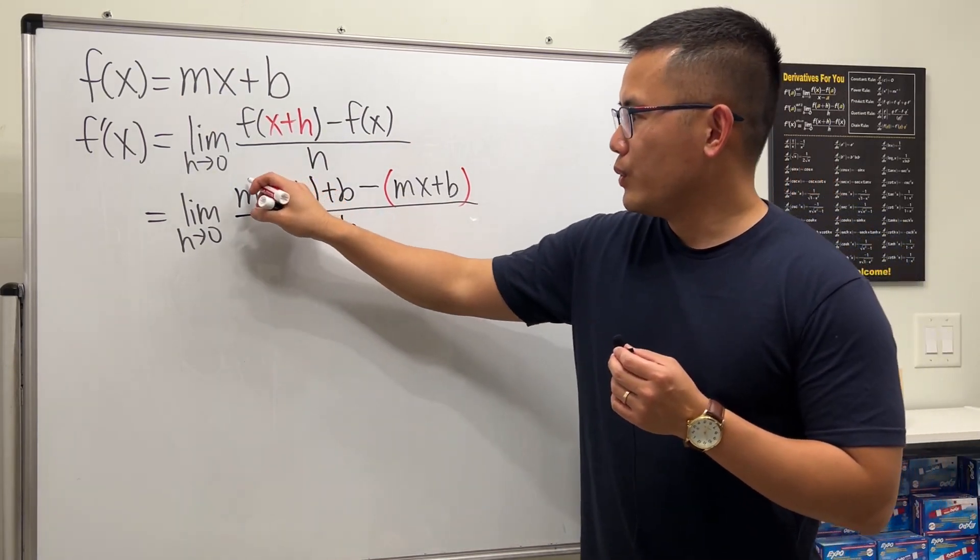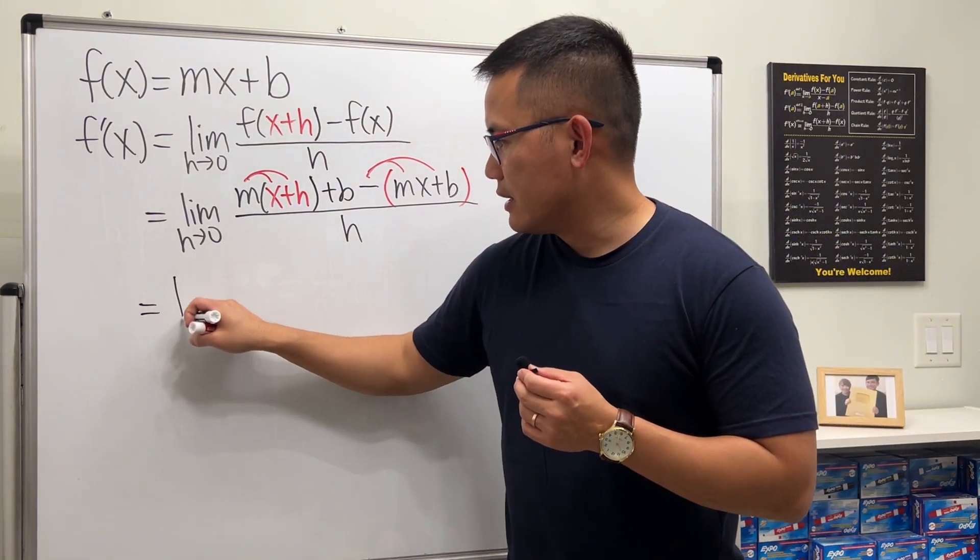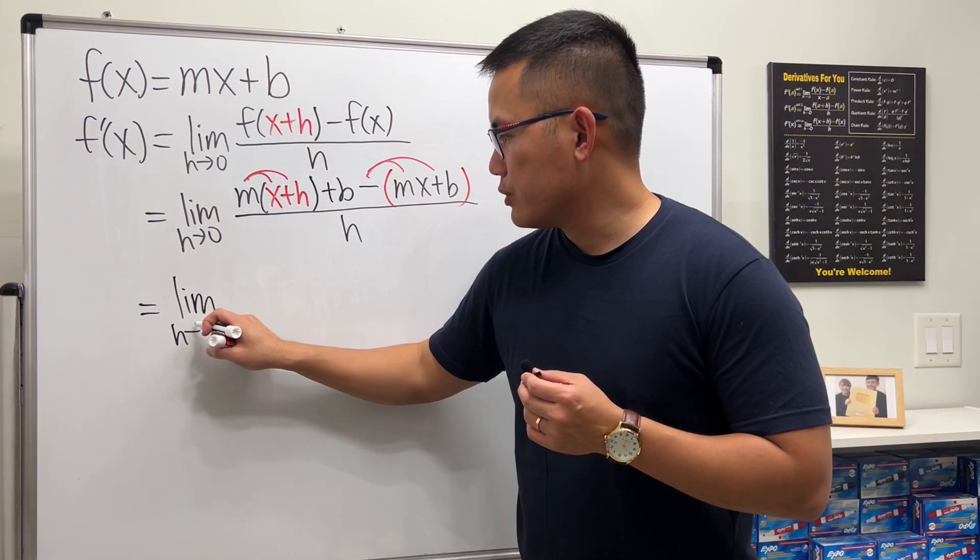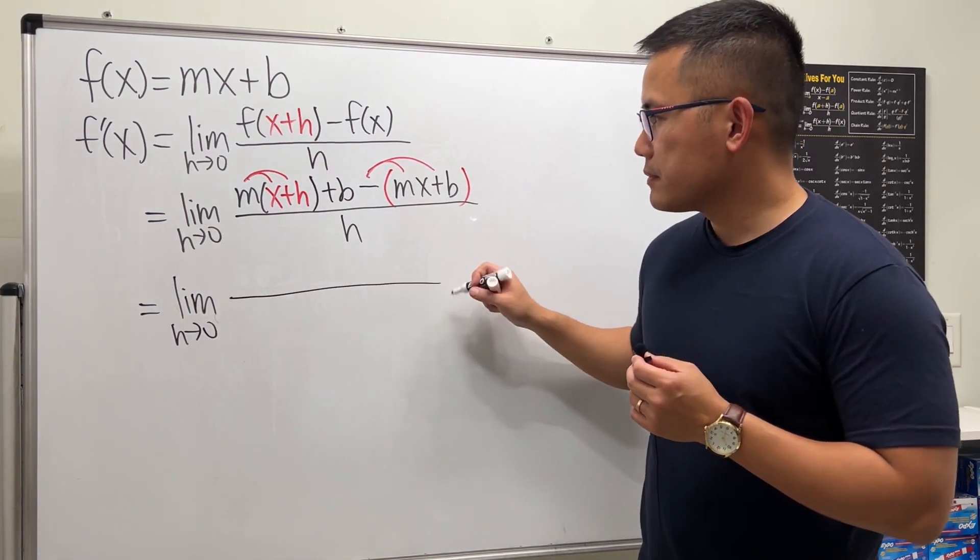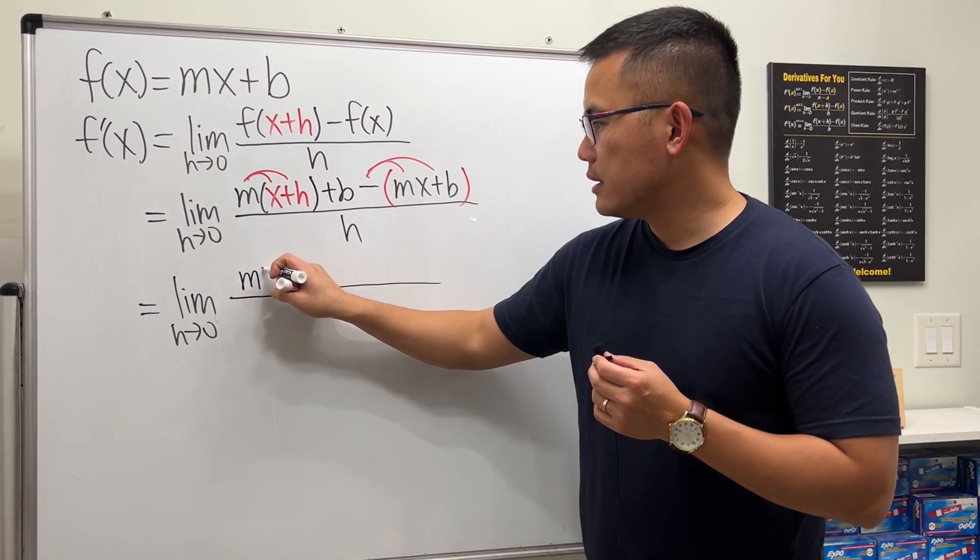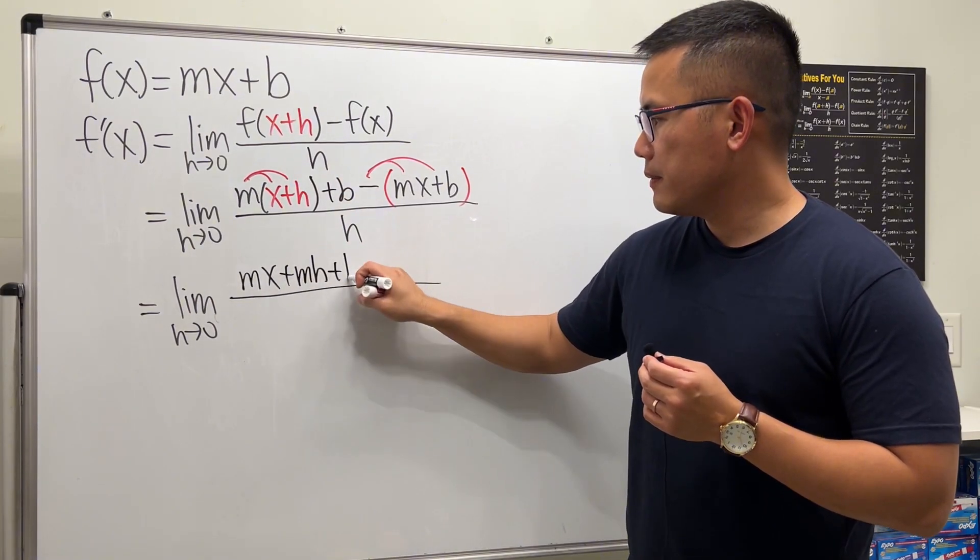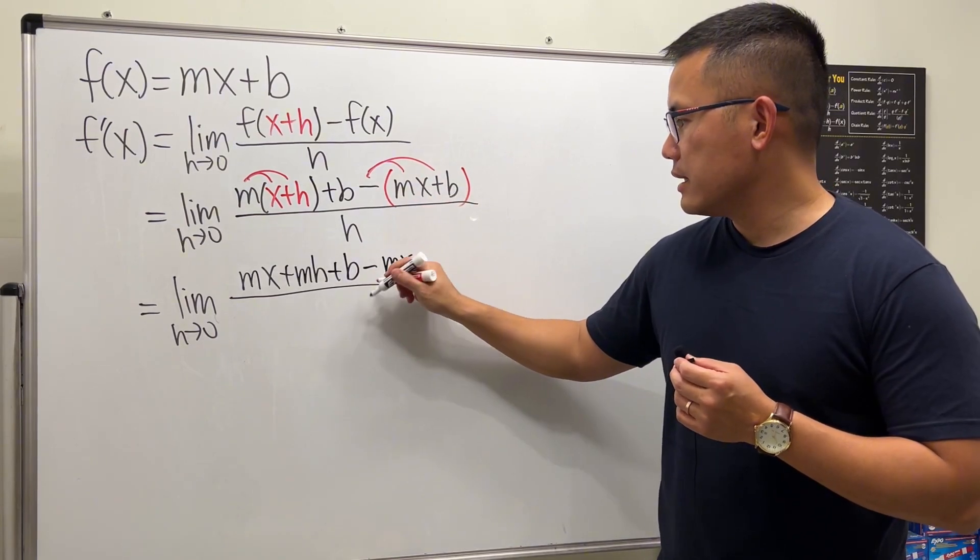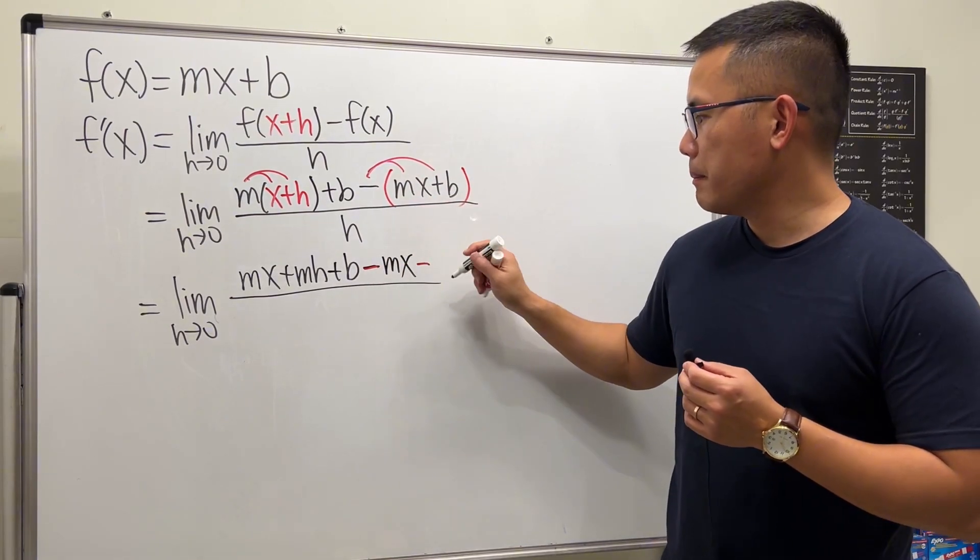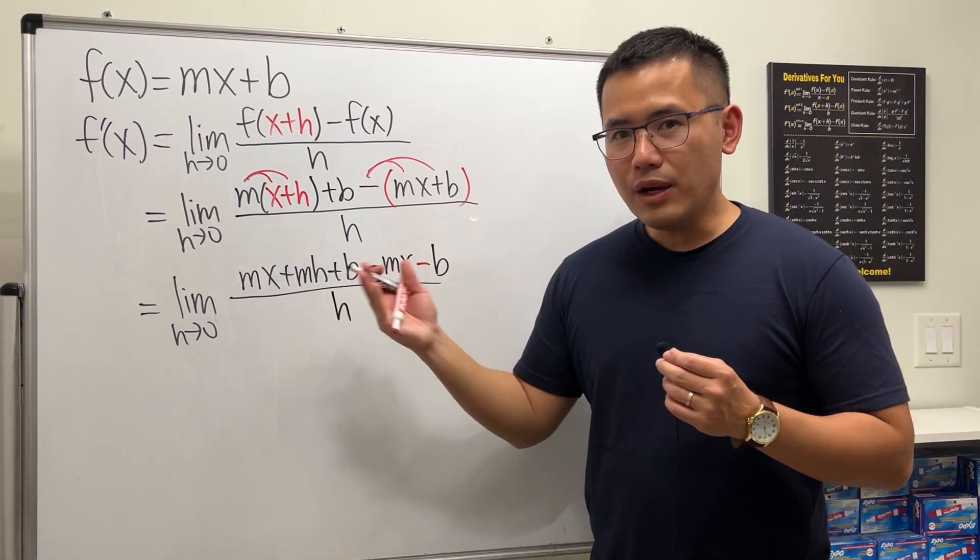Now, we will just distribute the m and also distribute the negative. So we will have the limit as h approaching 0, and the top will get mx plus mh and then plus b and then minus mx and then minus b, all over h.